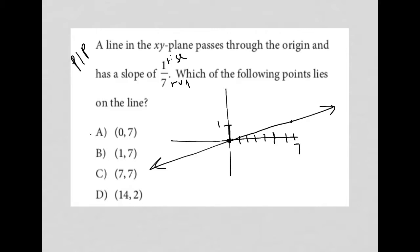So choice A, 0, 7. So 0 is the X value, 7 would be the Y value, which would take me up here, which is not on the line, so that's no good.